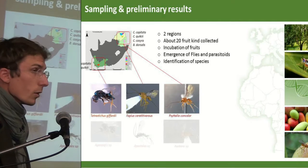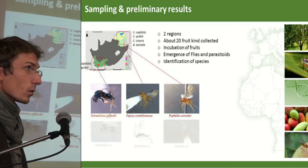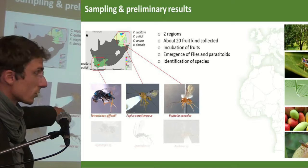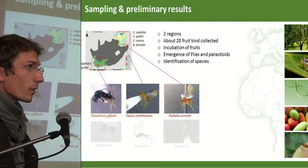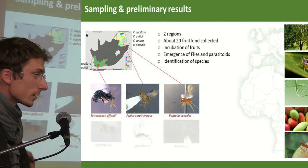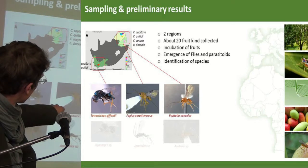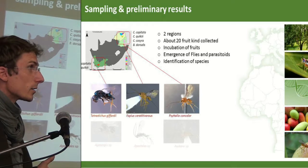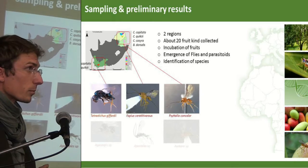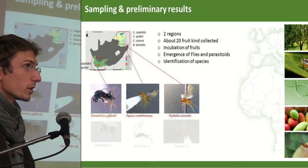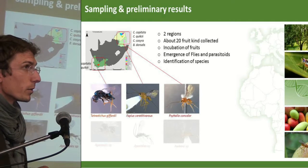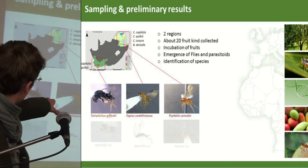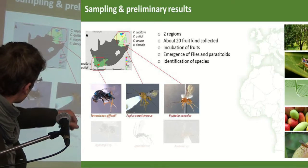These are the parasitoids we obtained in total. Apanteles is a parasitoid of false codling moth — we got it through emergence, but it's not directly a parasitoid of fruit flies. Two others, Aspis and Asubara, we don't really know — from the literature they could parasitize fruit flies, but they're mostly parasitoids of drosophilids that can also develop in fruits. The main fruit fly parasitoids found were three species: Tetrastichus, Fopius, and Diachasmimorpha.